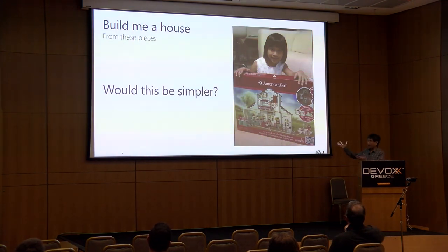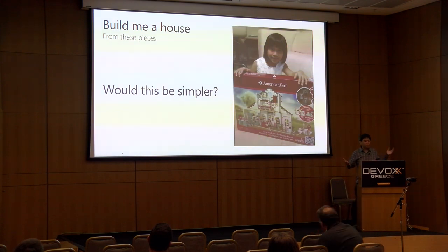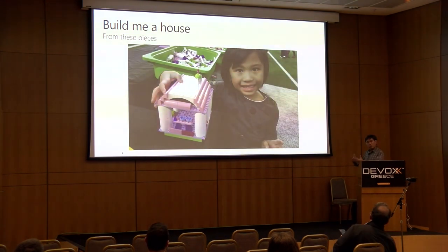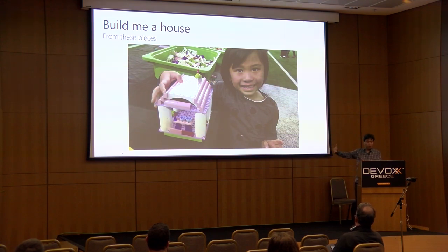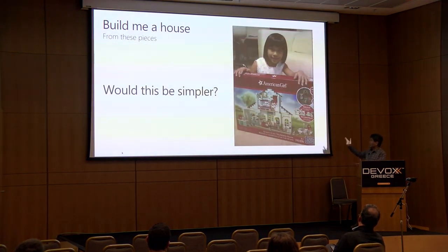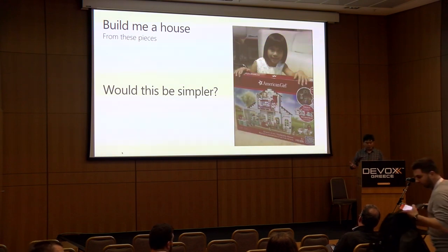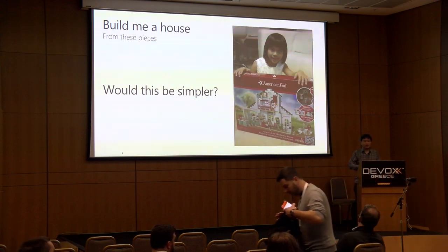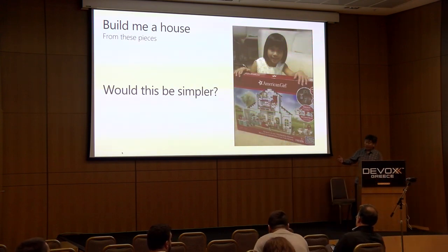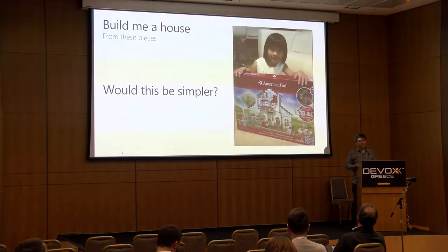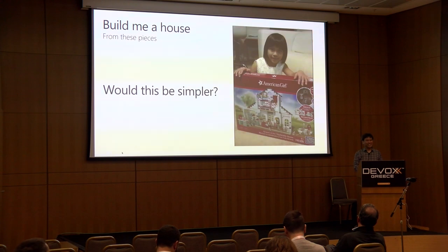A few years later she grew up and I bought her a different kind of Lego — a kit. If you instruct someone to build a house using a kit versus free-building, it's simpler to build with instructions and it looks like a house. But I still like the first one because I love my daughter.